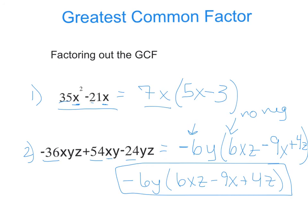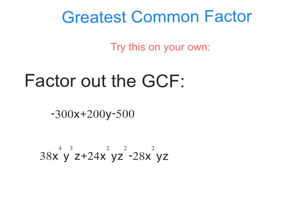Okay? So, I'd like you to try these on your own. Factor out the greatest common factor for number 1, negative 300x plus 200y minus 500. And number 2, 38x to the 4th, y to the 3rd, z, plus 24x squared, y, z squared, minus 28x squared, y, z. Thank you.